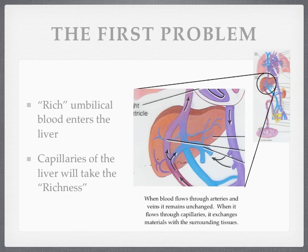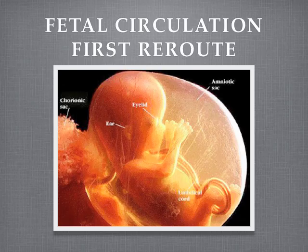But the problem is that if we run this blood through the capillaries of the liver, the cells of the liver are going to take the nutrients, take the oxygen, and leave very little resource for the rest of the developing body. So there is a problem as the umbilical vein arrives at the liver, and we have to solve that problem. This is our first rerouting — the first cardiovascular structure that is going to help with that.